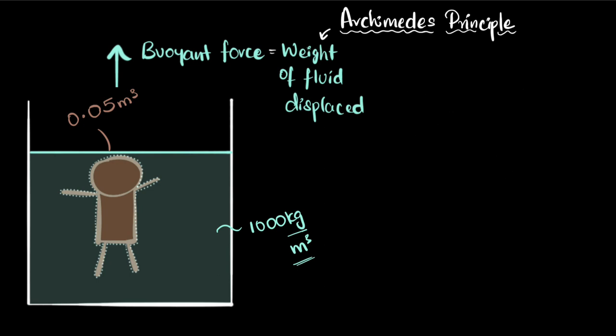So what would be the buoyant force? Buoyant force equals the weight of the fluid displaced. Weight is just mg. I know g, but what is m? M is the mass of that fluid displaced, the mass of this much amount of water. Now, how do I figure that out? How do I know what is the mass of this much amount of water? Well, I know density. Density is given to me. So density is mass by volume. Therefore, mass is density times volume.